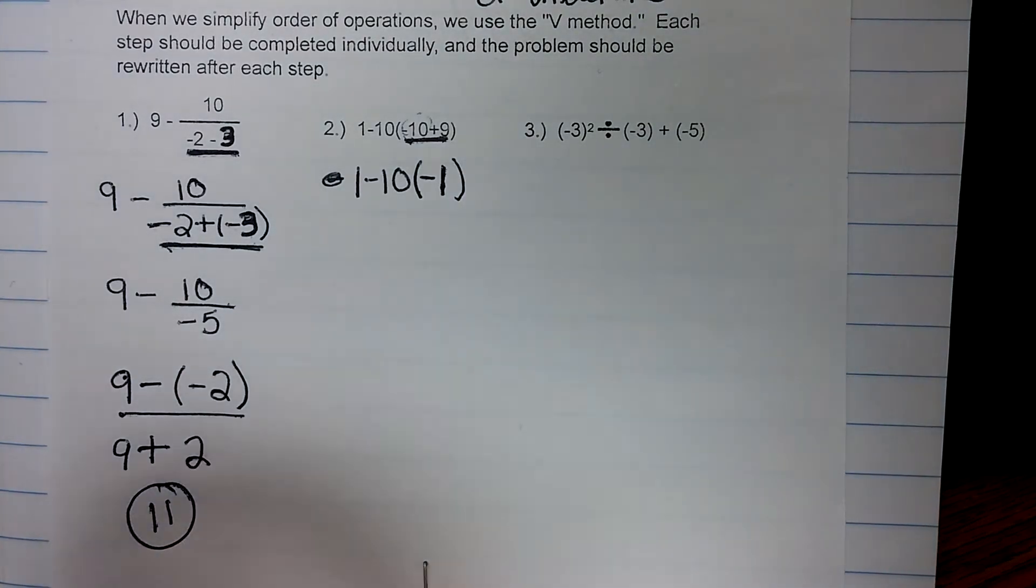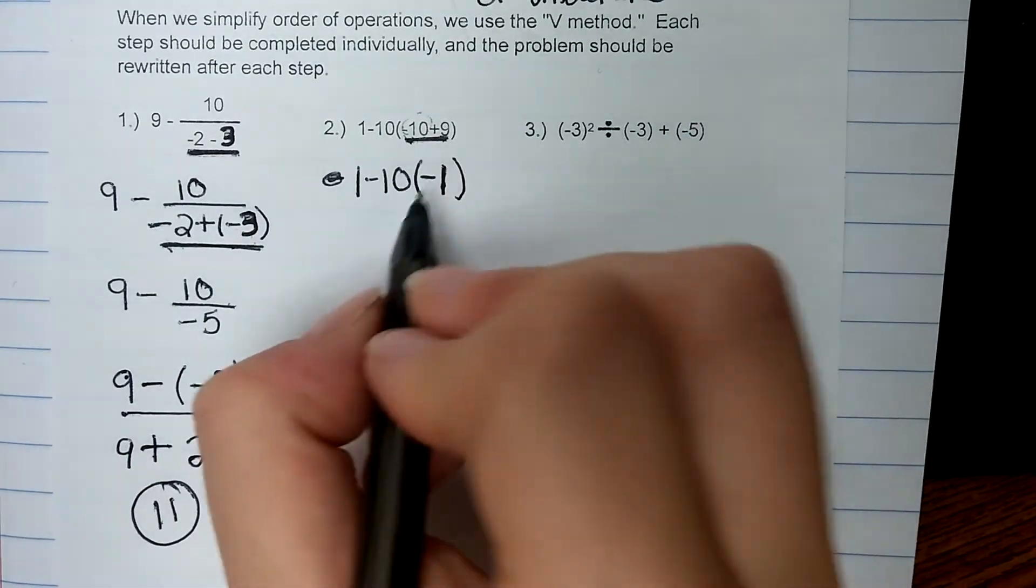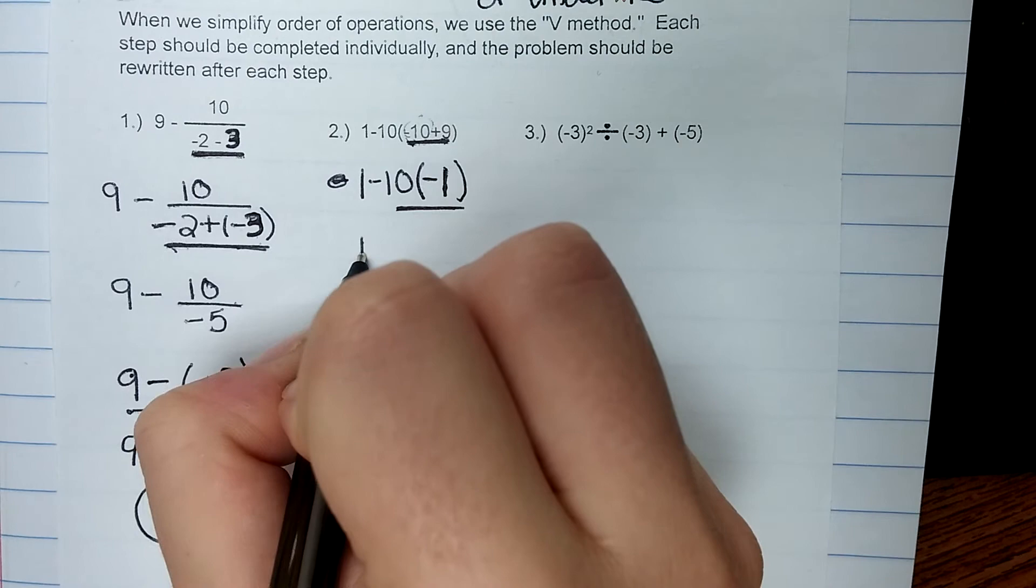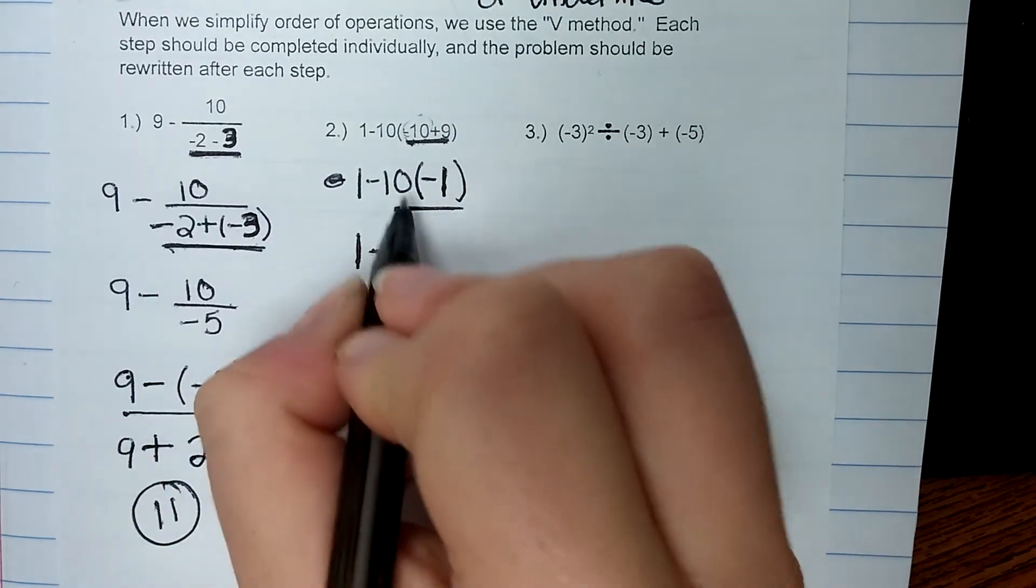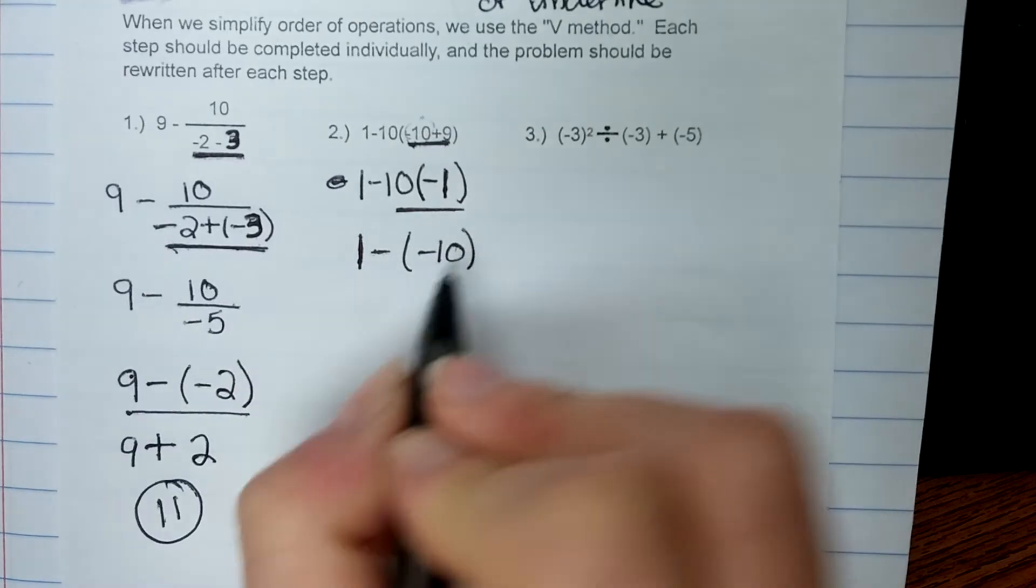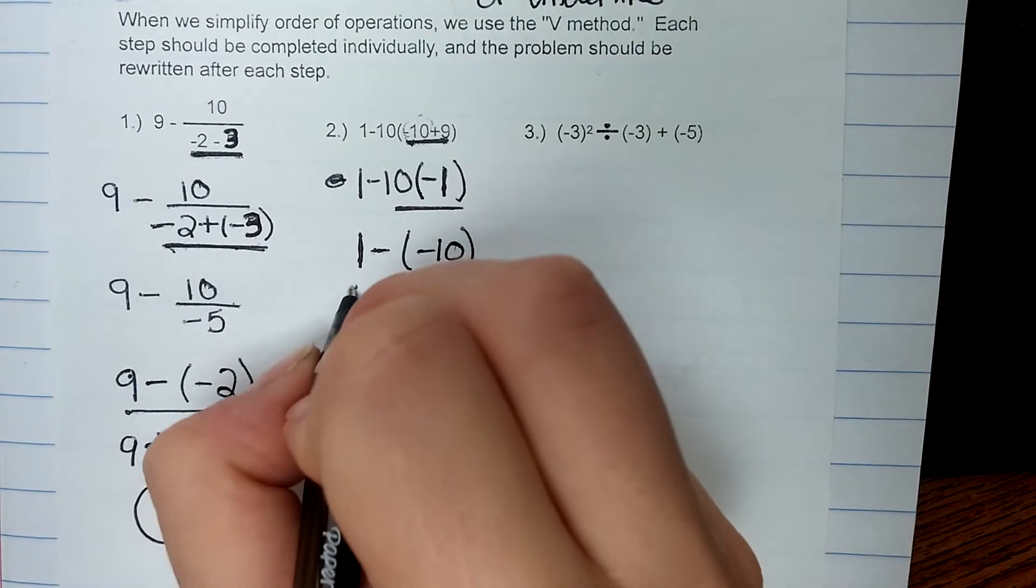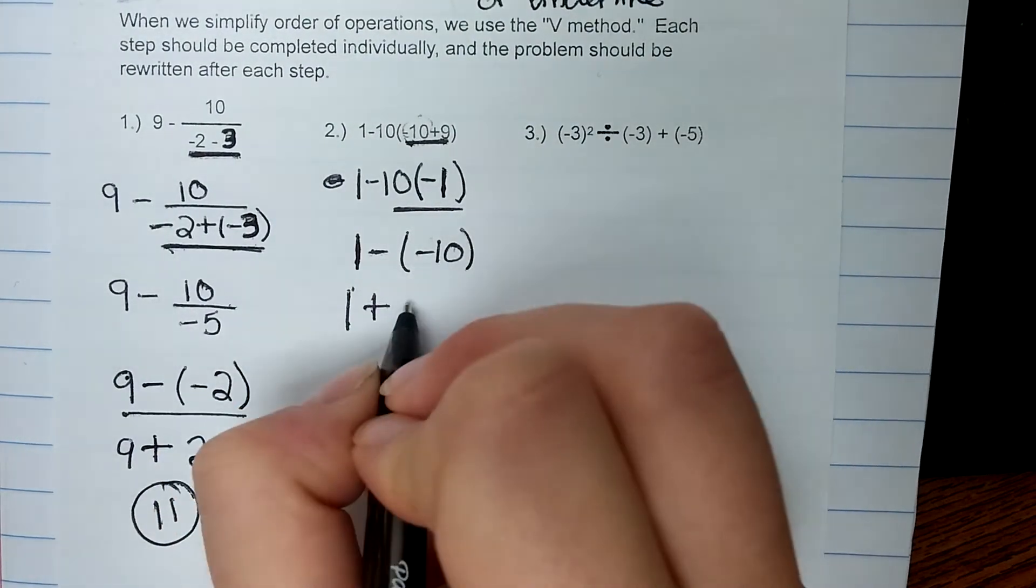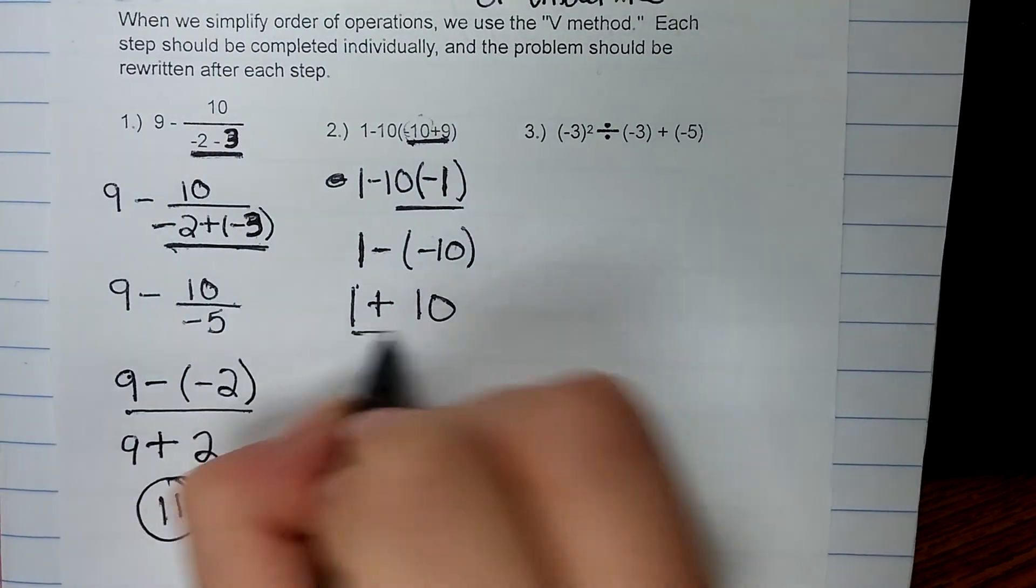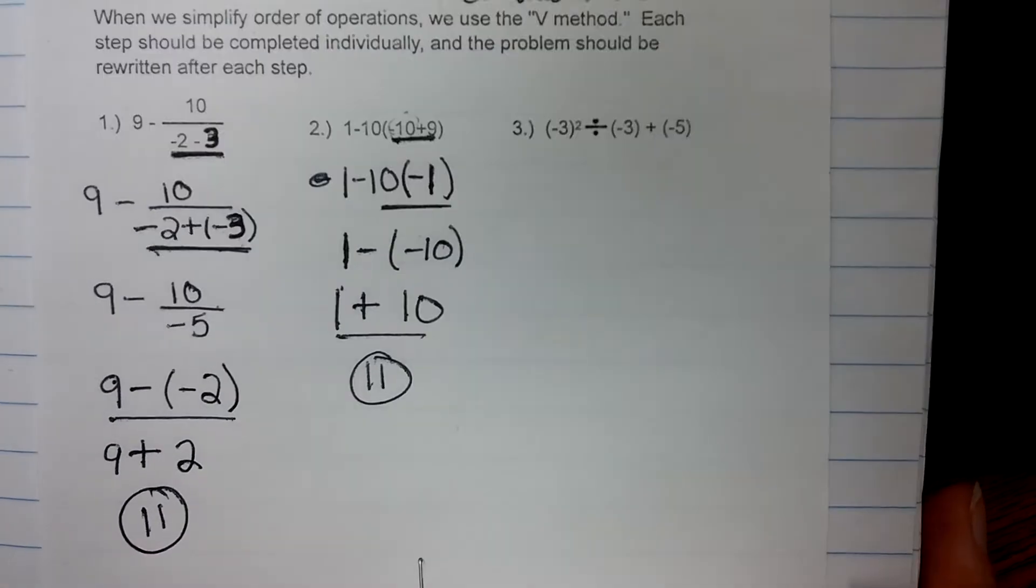My next step is to multiply, so I don't want to do 1 minus 10 next. I do want to do 10 times negative 1. So multiplying is my next step, so I copy down. 1 minus 10 times negative 1 is negative 10. I have a subtraction question, so I can use KCO to change this to an addition. So keep, change, opposite, and again, 1 plus 10 gives me 11. So for the second time in a row, my examples worked out to be 11.